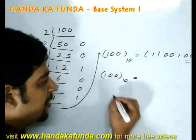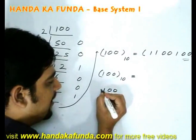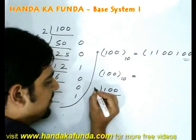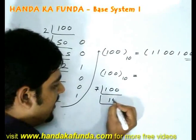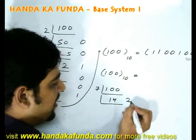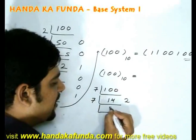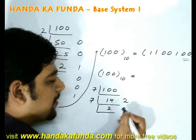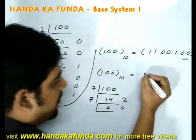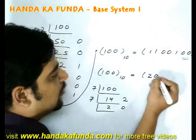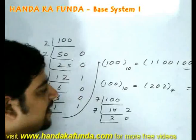Now suppose I convert 100 to base 7. Dividing 100 by 7, I get 14 with a remainder of 2. Dividing again by 7, it is divisible twice with a remainder of 0. Reading from bottom to top, I get 2, 0, 2 in base 7.